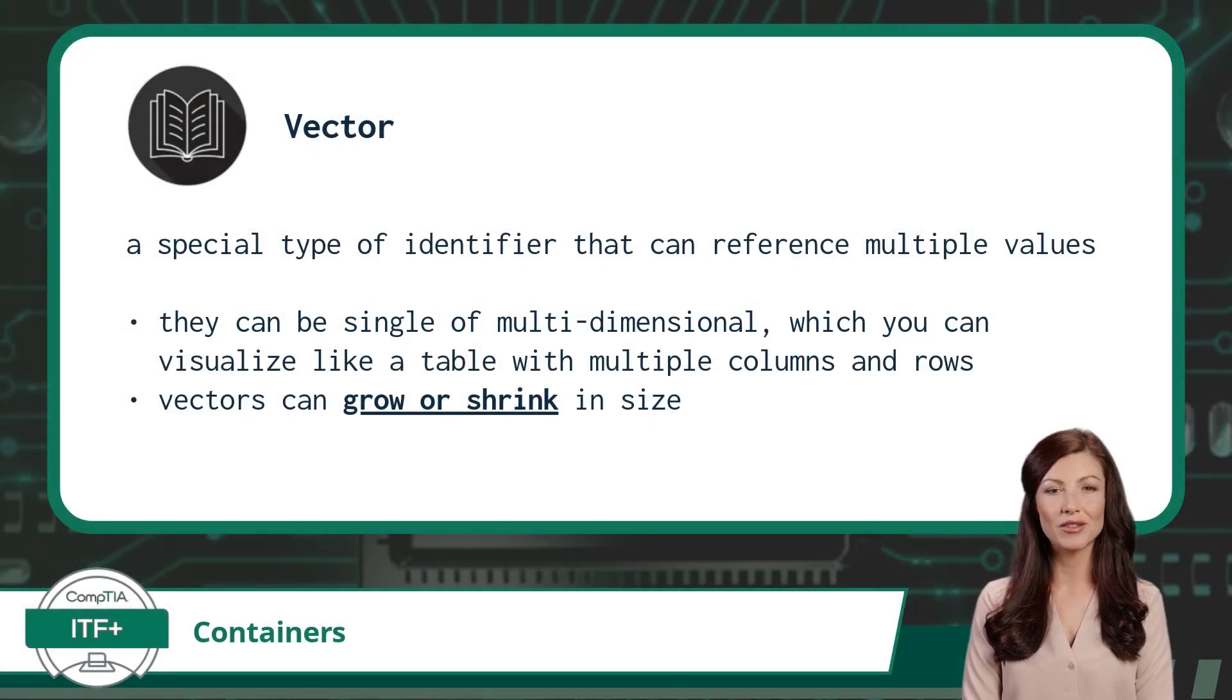Now, how does CompTIA define a vector? A vector is another special type of identifier that can reference multiple values. These values can also be arranged in a single or multi-dimensional manner. But a vector differs from an array in one major way. A vector has the ability to grow or shrink in size.